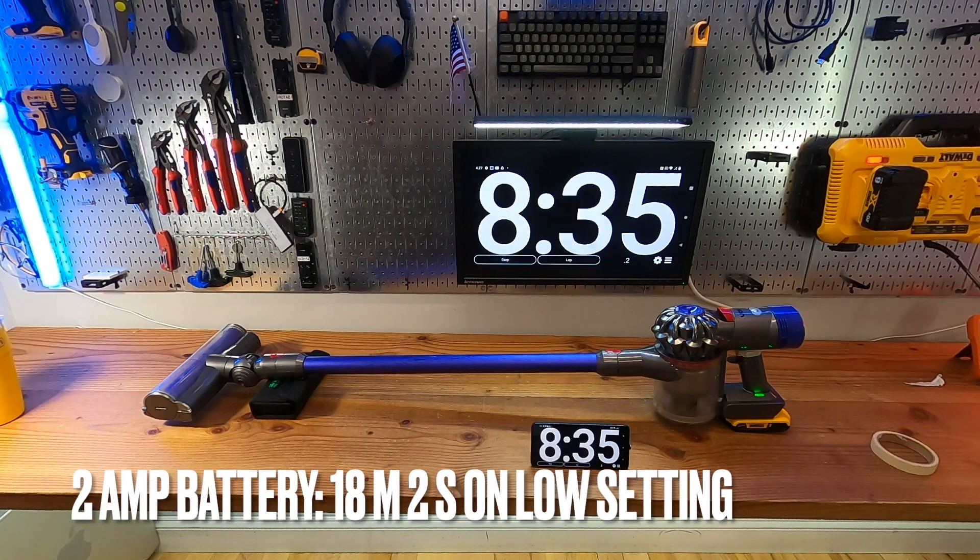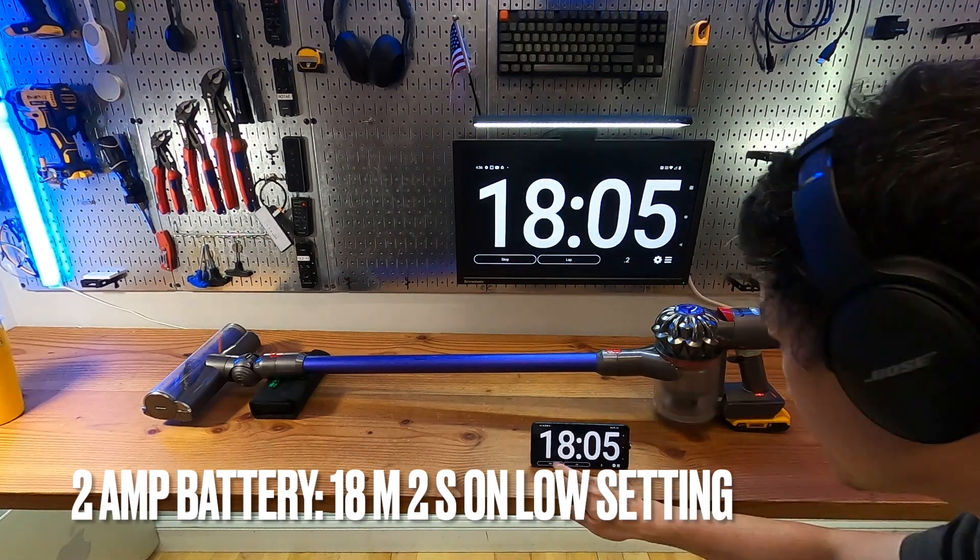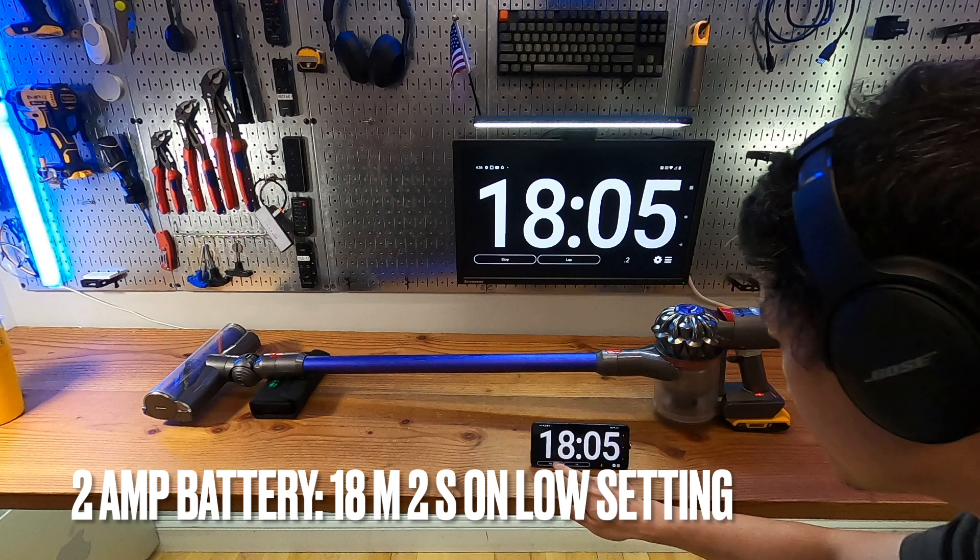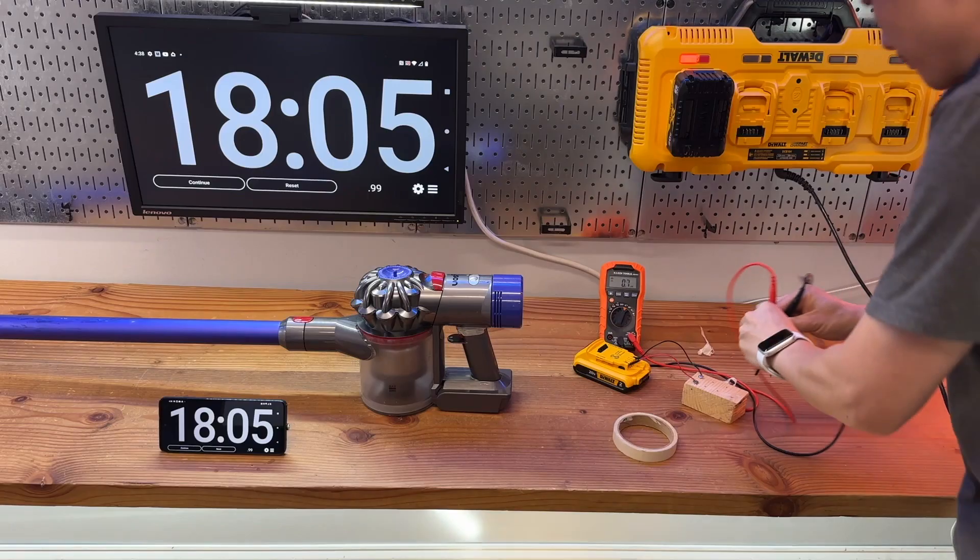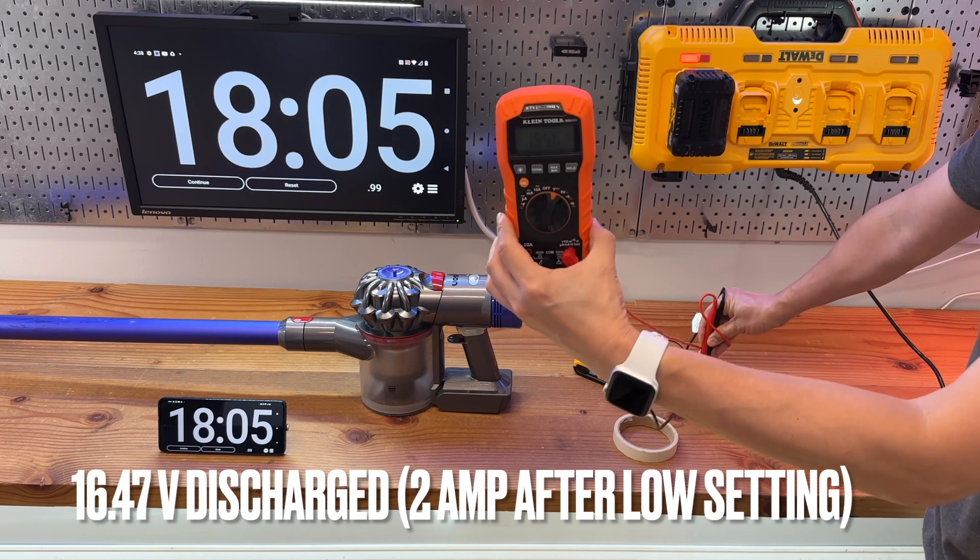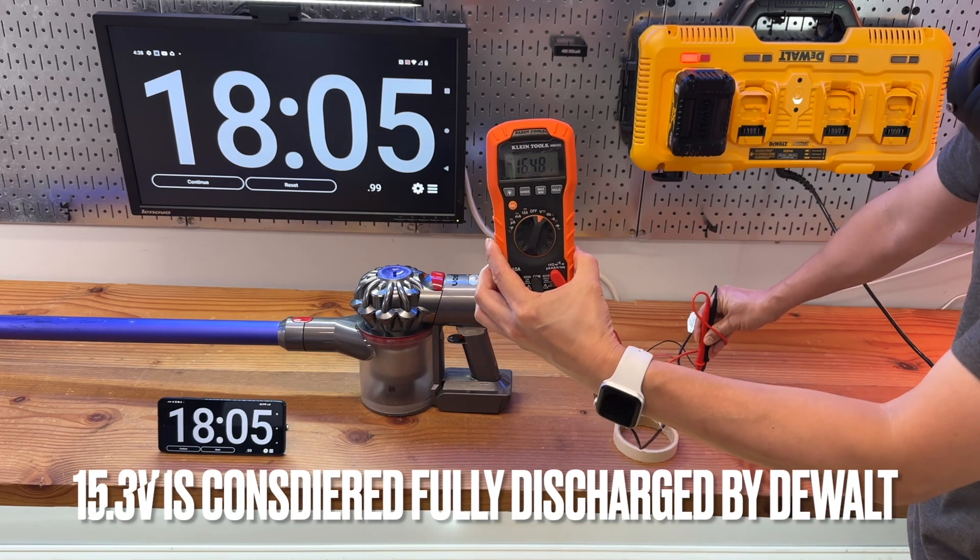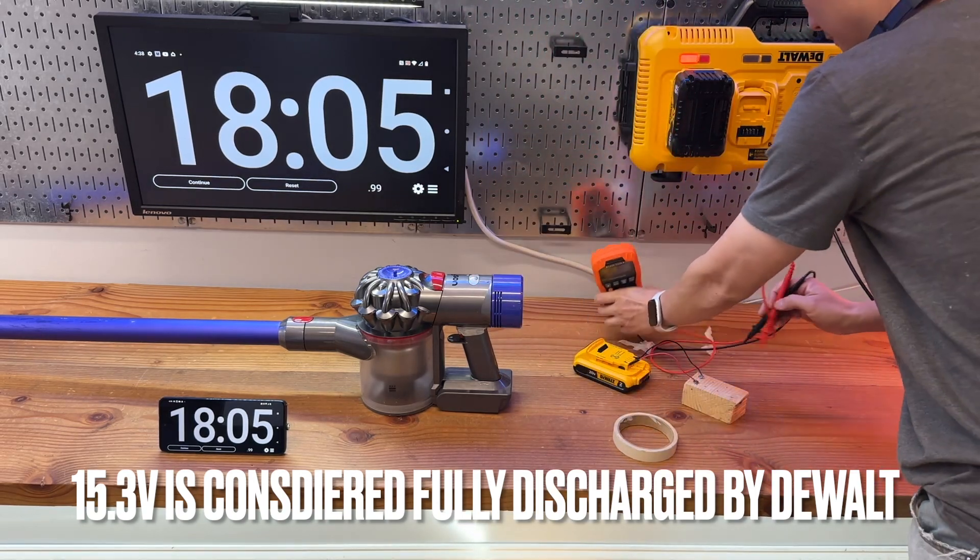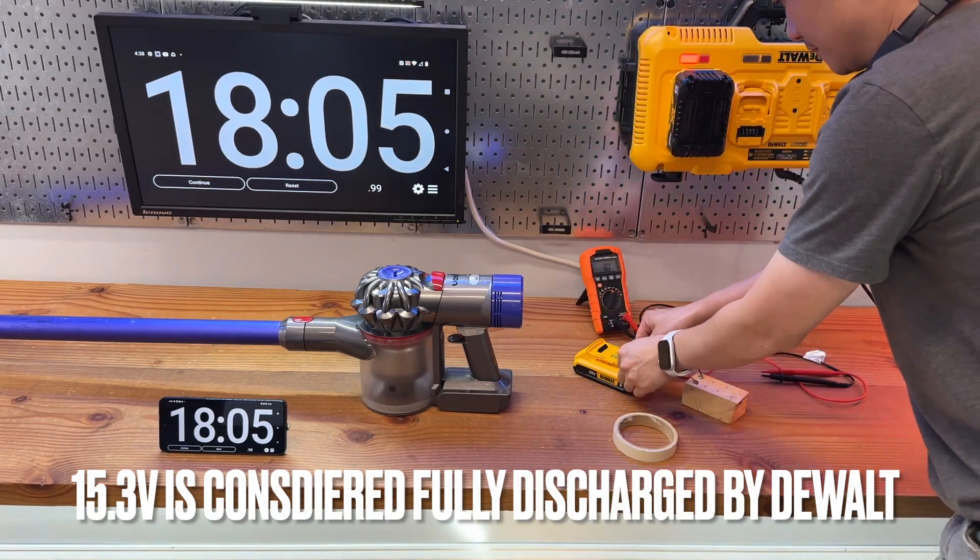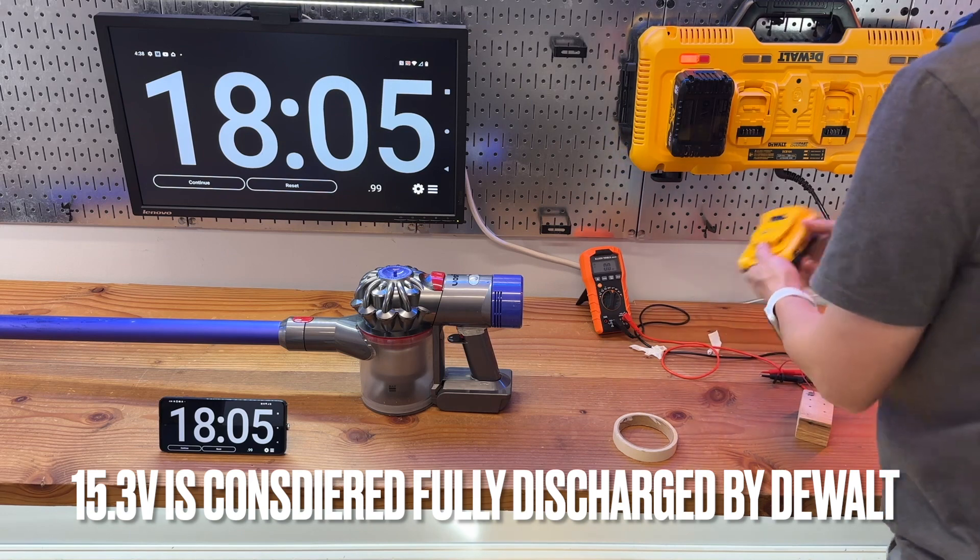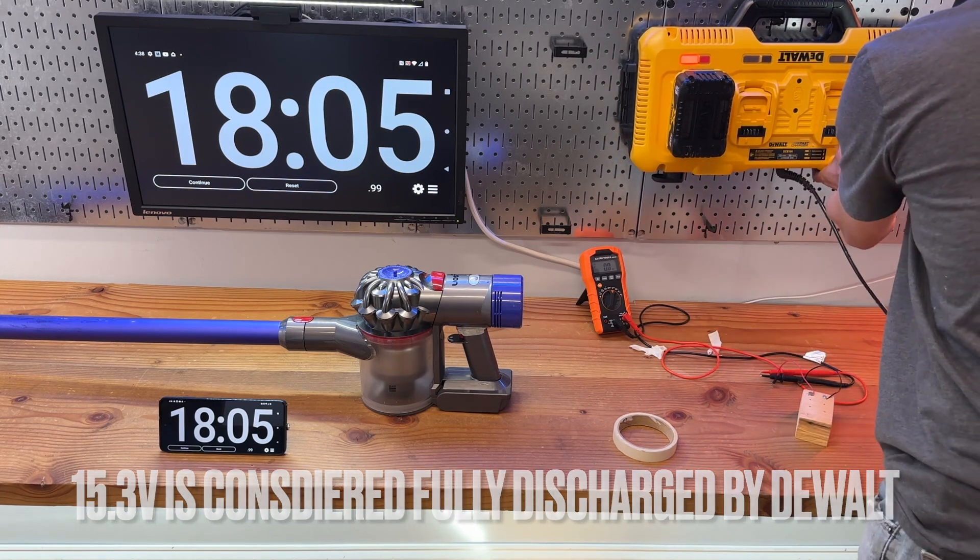The 2A battery lasted 18 minutes and 2 seconds on the low setting. I think you should be able to get around 20 minutes if the battery is brand new. After the vacuum stopped automatically, I measured 16.47 volts. This is good because it means the adapter has a pretty high cutoff point to avoid deep discharging that may damage the battery, considering 15.3 volts is considered fully discharged by DeWalt.